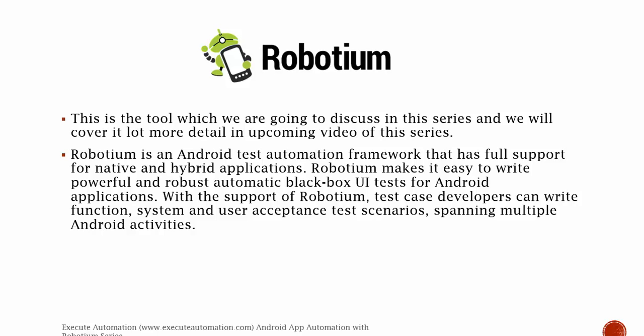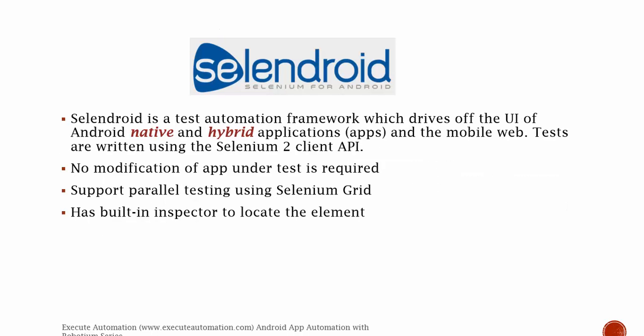Robotium is an Android automation testing framework that has full support for native and hybrid applications. Robotium makes it easy to write powerful and robust automatic black box UI tests for Android applications. With the support of Robotium, test case developers can write function, system, and user acceptance test scenarios spanning multiple Android activities. We will cover all these things in detail in upcoming videos.